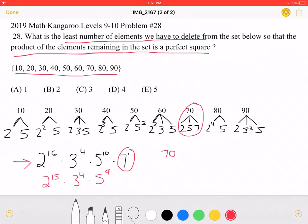So no matter what, we know we must get rid of 70. Now, we know we must get rid of an additional number because we still have odd exponents. That's 15 for the 2 and 9 for the 5, so we can remove a 10.